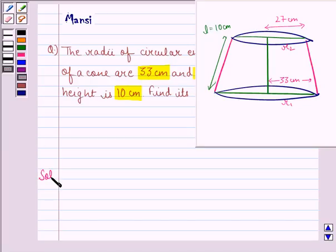Let us start with the solution to this question. The total surface area of the frustum is given by π(r₁ + r₂)L + πr₁² + πr₂².